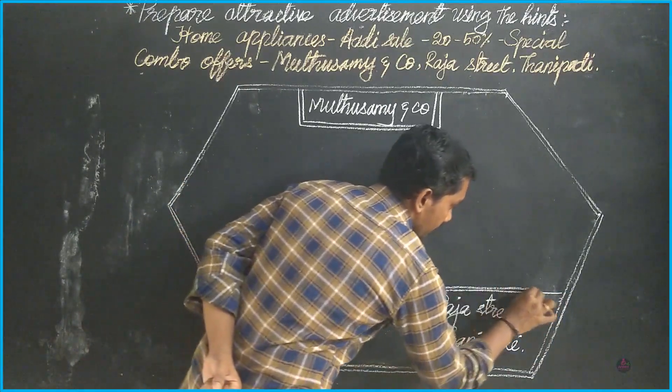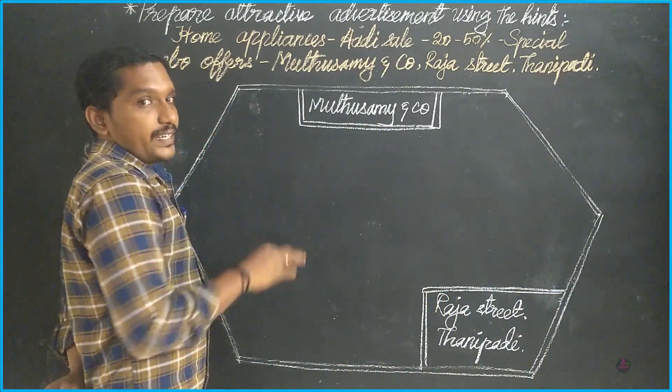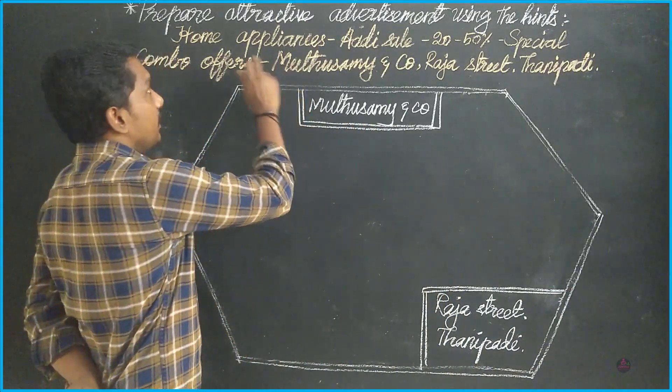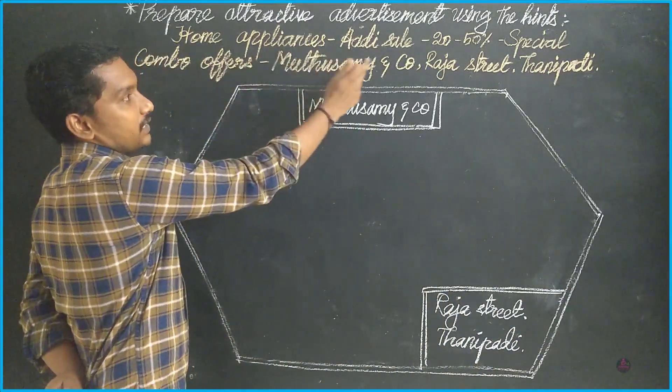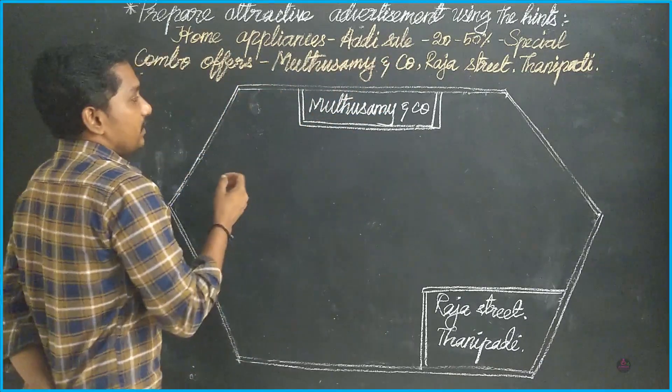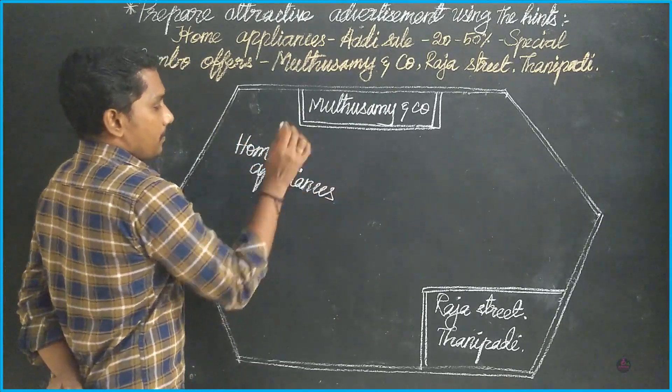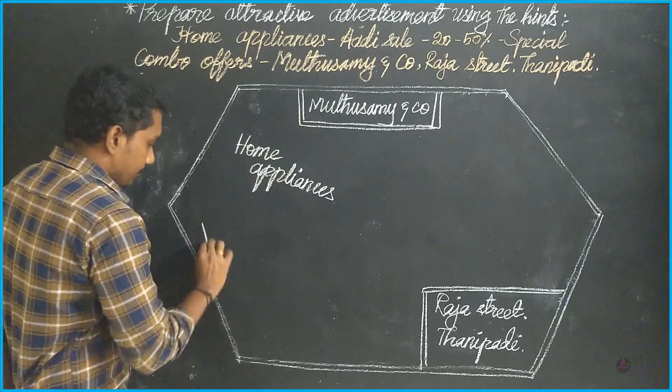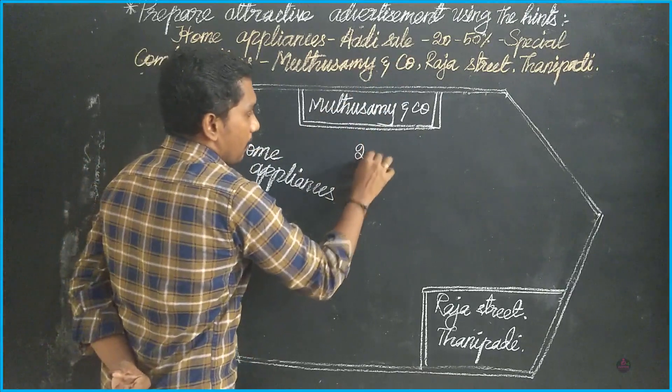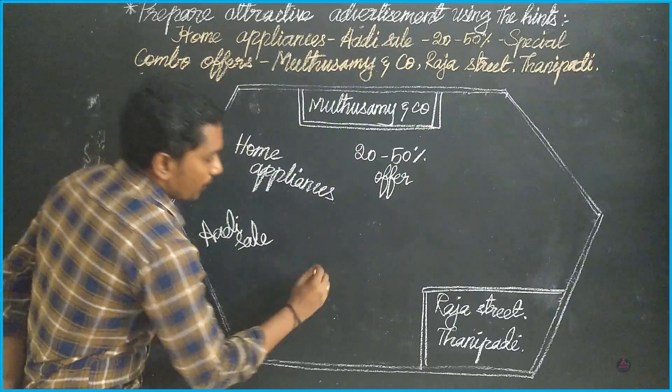Now we have to write related subtitles for this advertisement. Those words we can get from the question here. See: home appliances, Audi sale, 20 to 50 percentage, special combo offers - these are the keywords. Just take it down and write here in a zigzag manner: home appliances, then Audi sale, then 20 to 50 percentage of offer, then special combo offer.